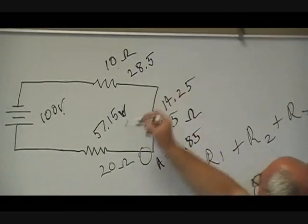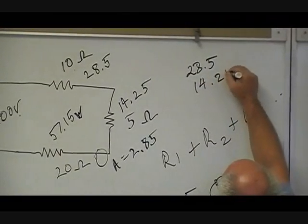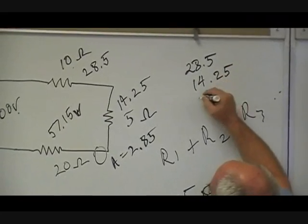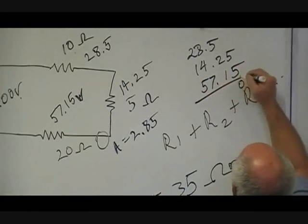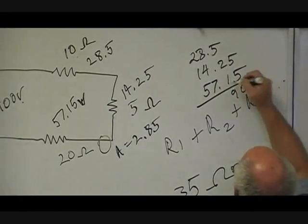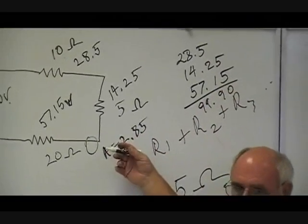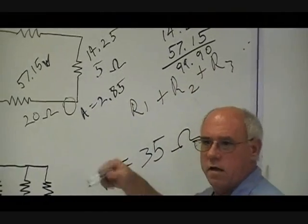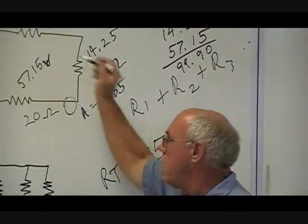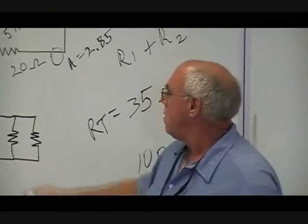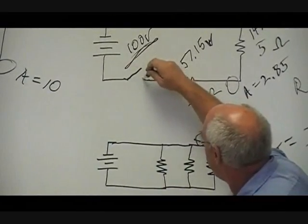Now I want you to do something. Let's add these up. 28.5 plus 14.25 and 57.25. 99.9. You know, I rounded off on my amp drop. That's the reason it didn't come out to 100. If I hadn't rounded it off, it would have come up to the voltage source. That's the way you figure voltage drop.